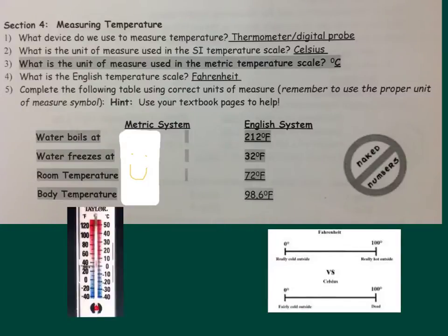To begin with, we would like to introduce to you the practice of measuring temperature in the metric system. To start, you should know that the device that we use to measure temperature is a thermometer or a digital probe. We should be used to using these already because no matter what we are measuring, when it comes to temperature, we always use a thermometer or a digital probe. The biggest difference you'll find so far is the unit of measure that is used in the metric temperature scale. That is Celsius.